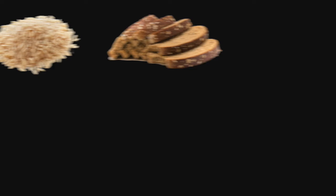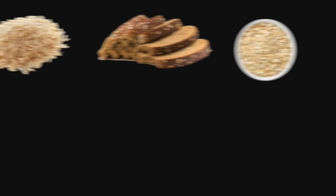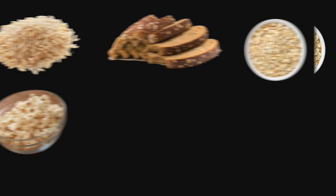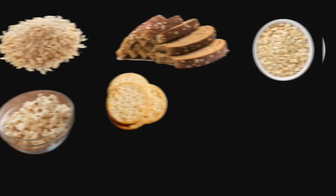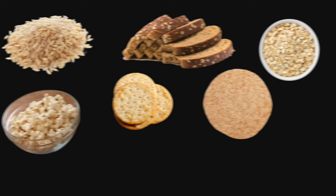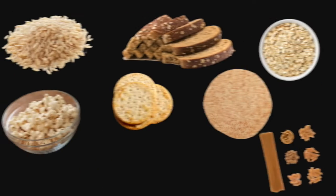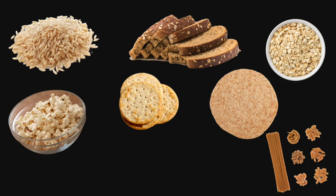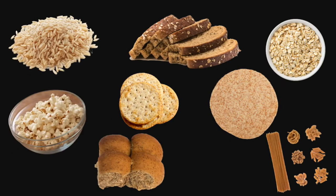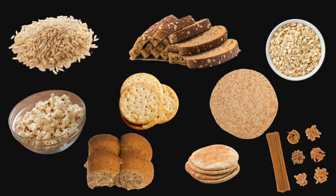The third food group is grains. You should have three to seven ounces each day. Here are some examples of grains: brown rice, whole wheat bread, oatmeal, popcorn, whole wheat crackers, whole wheat tortilla, whole wheat pasta, whole wheat rolls, and whole wheat pita bread.